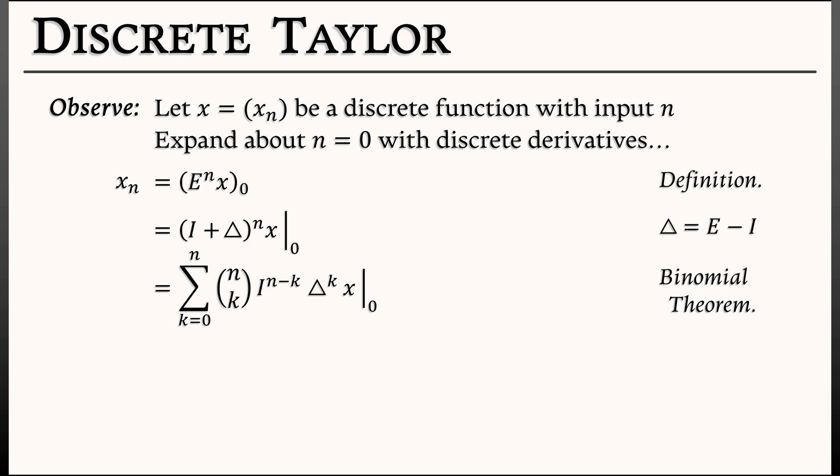That identity operator does nothing. And what we're left with is the sum k goes from 0 to n of delta to the k, x, evaluated at 0, times this binomial coefficient n choose k. This is starting to look like a Taylor series, right? I have the k-th derivative of x evaluated at the origin, but I have that binomial n choose k out there. I'm going to convert to falling powers notation. Remember, n choose k is really n to the falling k divided by k factorial. And that's it.